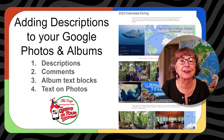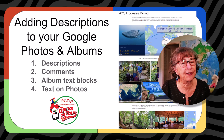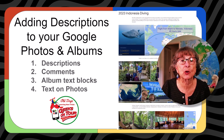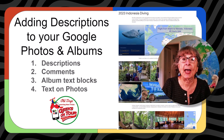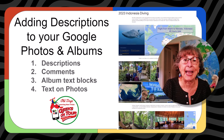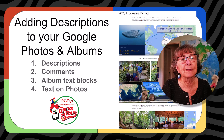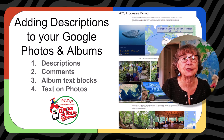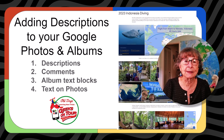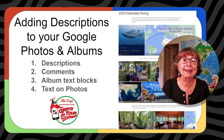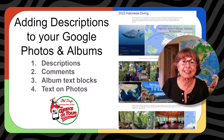Hi, this is Chris Gould with Geeks on Tour, and this is Fun with Photos. This week I want to answer a question that I got from a follower. He says he really likes sharing photo albums with friends, but he wants to be able to write some text that they will see with each photo, like a caption at the bottom. In Google Photos there is no perfect option for this, but there are four different choices: descriptions, comments, album text blocks, and text on photos.